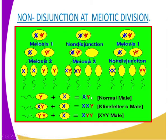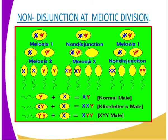Remember, a normal female has XX chromosome, while a normal male has XY chromosome. But in the case of a male who has Klinefelter syndrome, the sex chromosomes become XXY instead of XY. A non-disjunction leading to Klinefelter syndrome can occur either during spermatogenesis or oogenesis. It results in half of the gametes containing an extra chromosome. When the gamete with an extra chromosome fuses with a normal gamete from the opposite sex, an individual with Klinefelter syndrome is produced.